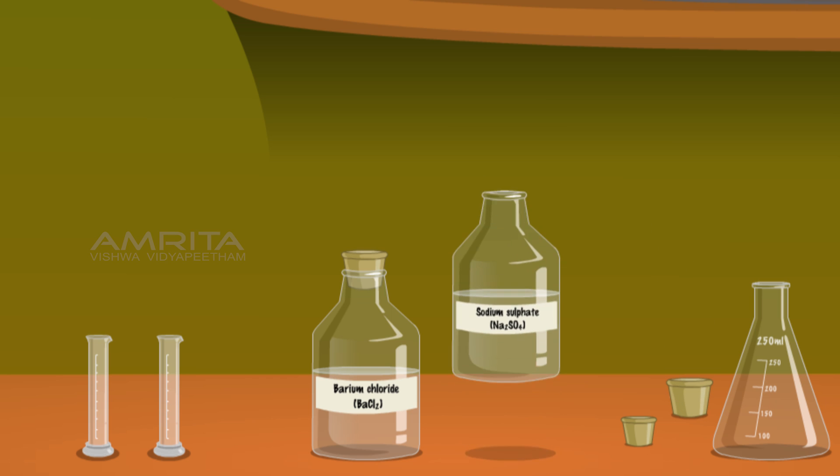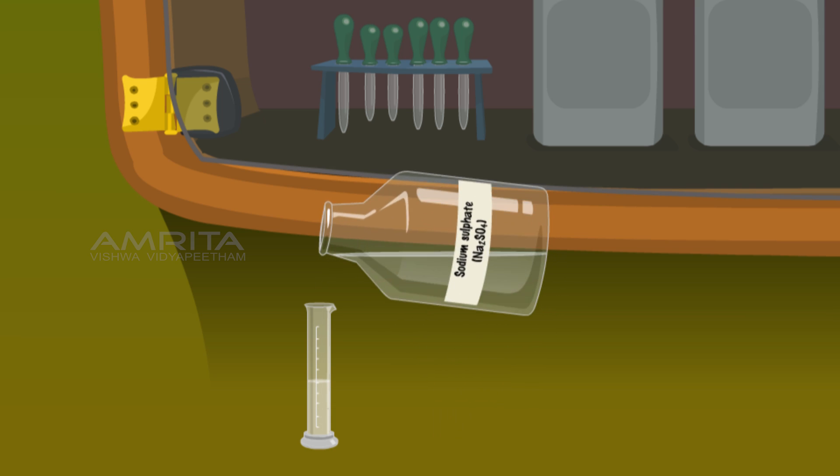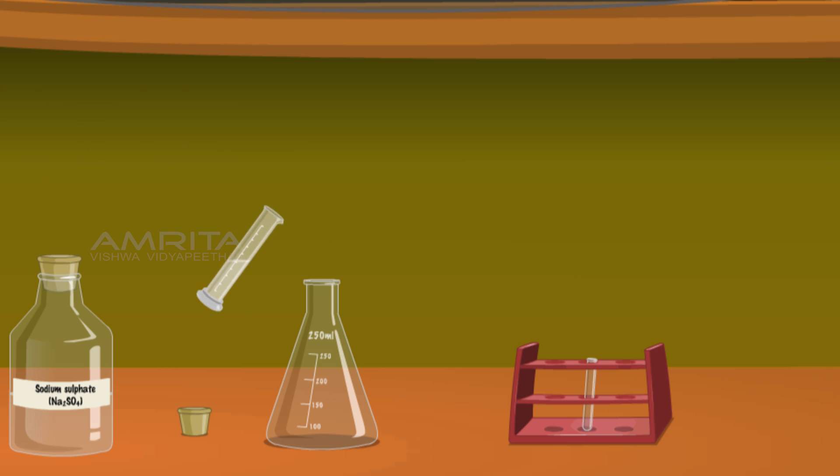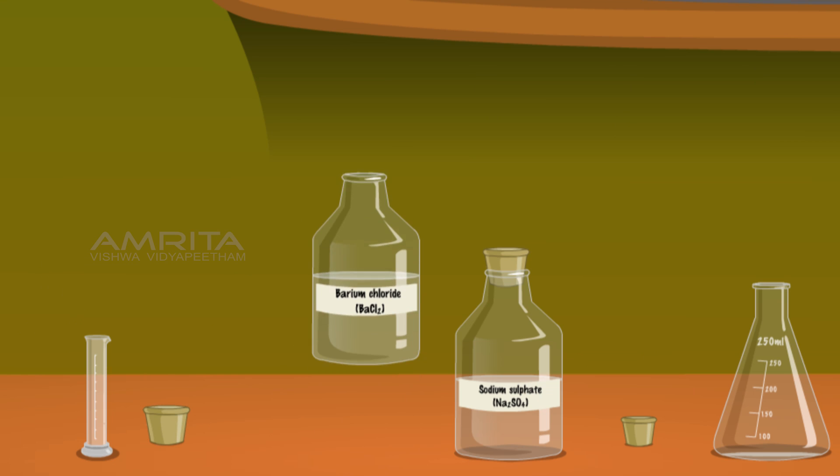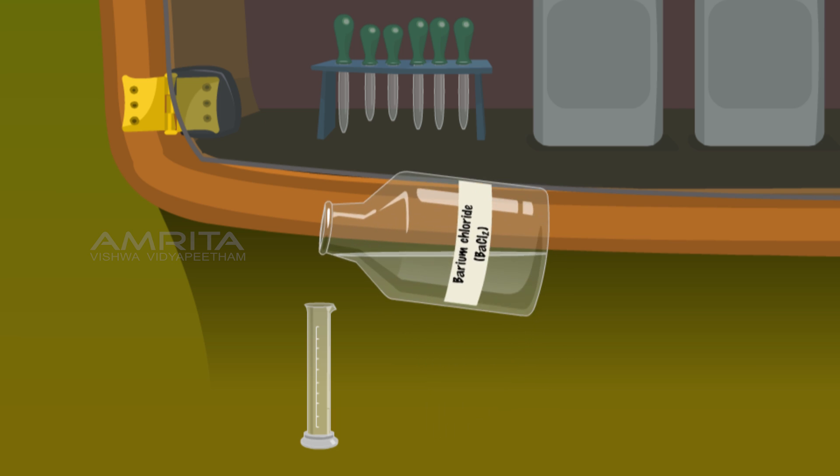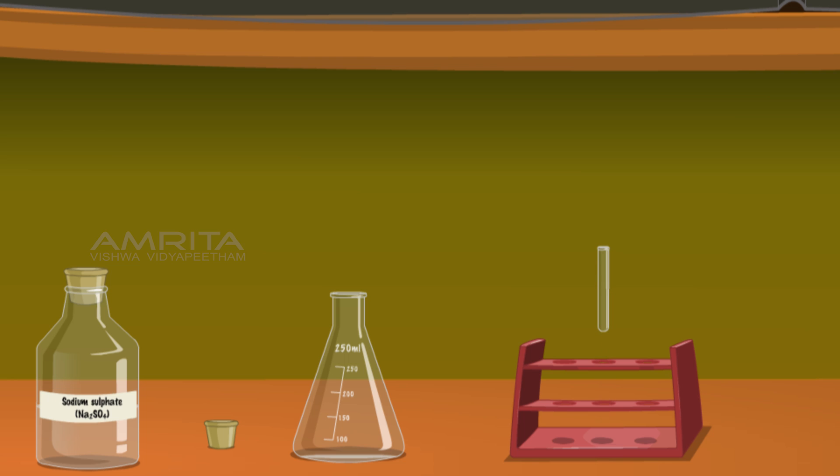Measure 5ml of sodium sulphate solution in a measuring cylinder. Pour it into a conical flask. Measure 5ml of barium chloride solution in another measuring cylinder. Pour it into a 10ml test tube.